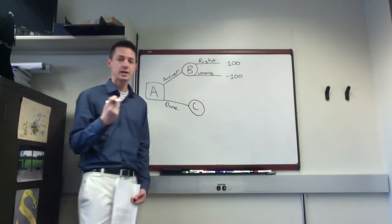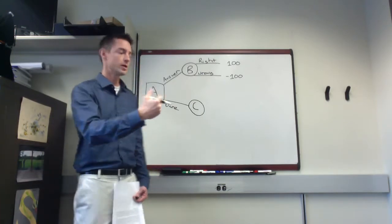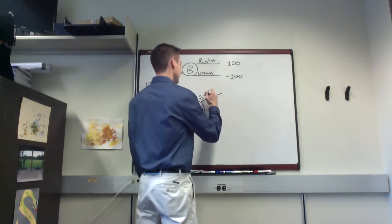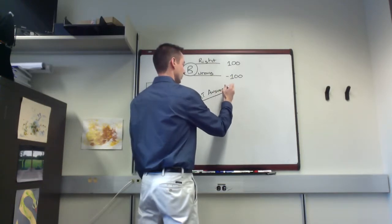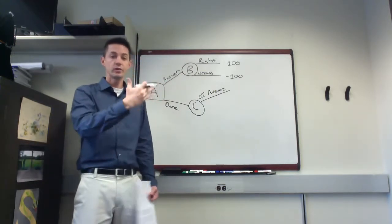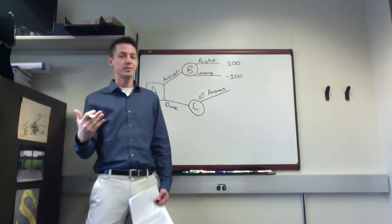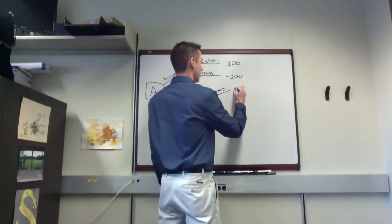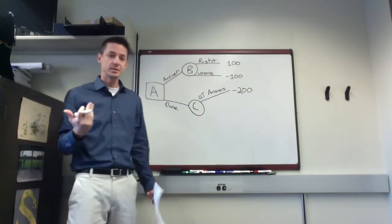From chance node C there are two outcomes: either the other team answers — and since we've assumed they only answer when they know the answer, they'll get it right — or they double dare it back to us. If the other team answers correctly, since we dared, the value of the question has doubled, so we receive a payoff of -$200.